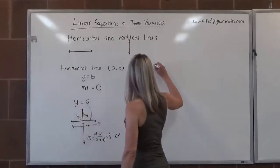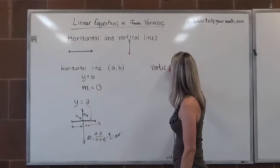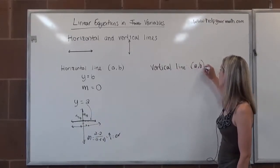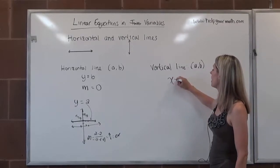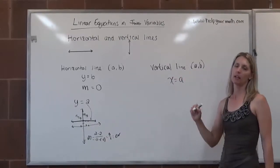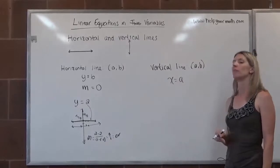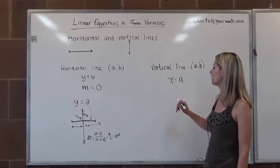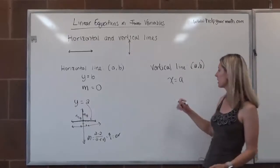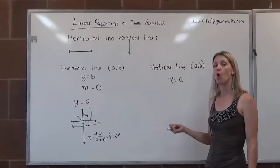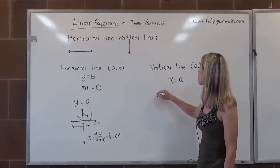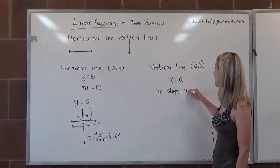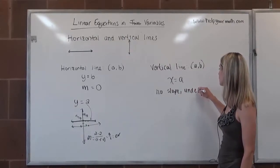For vertical lines, if we have a point on a vertical line (a, b), the equation of the vertical line would be x equals a. Notice that when we write a vertical line, we don't have a y variable. Every vertical line has either an undefined slope, or you can say there is no slope.